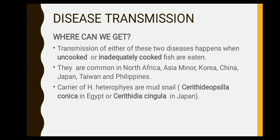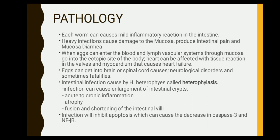Transmission can occur from snail to fish. Regarding pathology, each worm can cause a mild inflammatory reaction in the intestine. When heavy infection occurs, it causes damage to the mucosa and produces intestinal pain and mucous diarrhea.